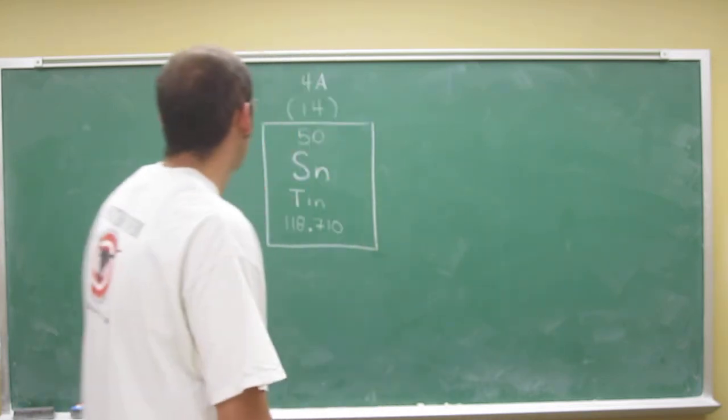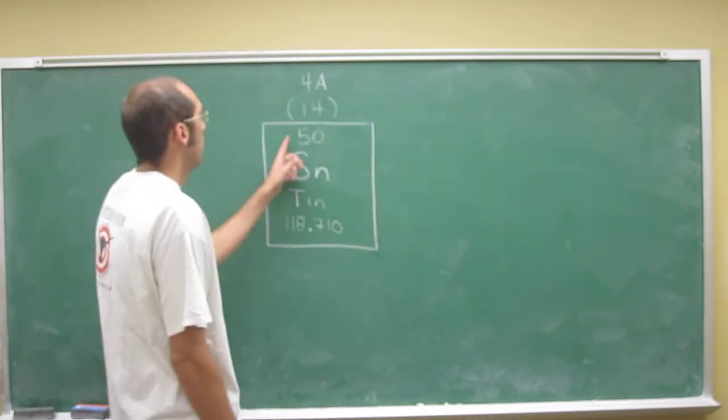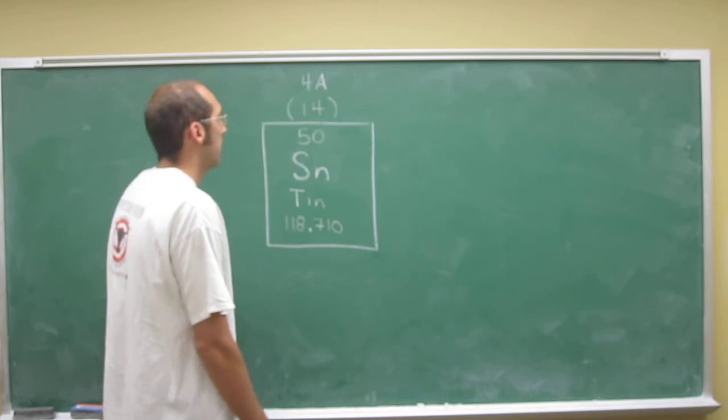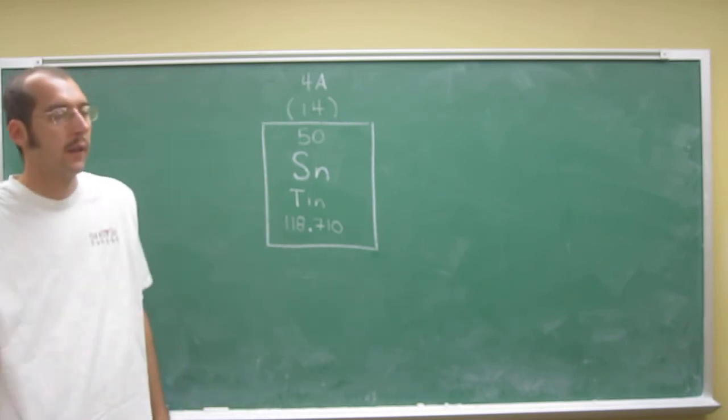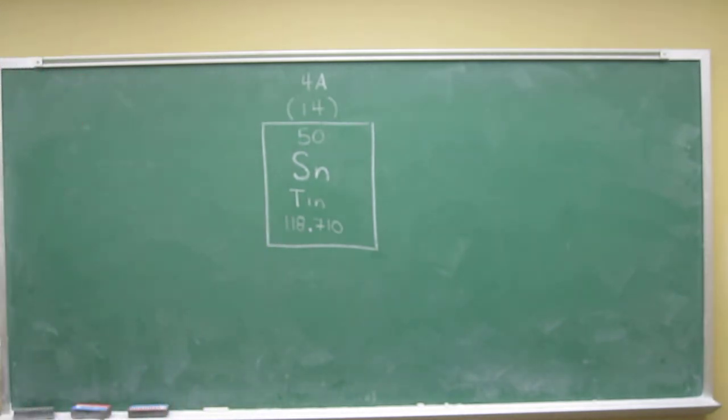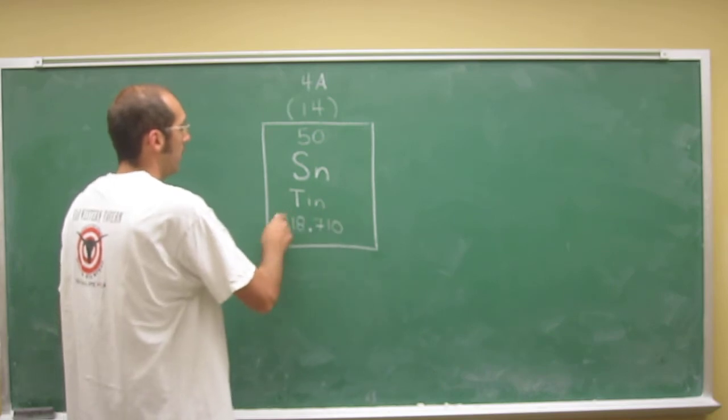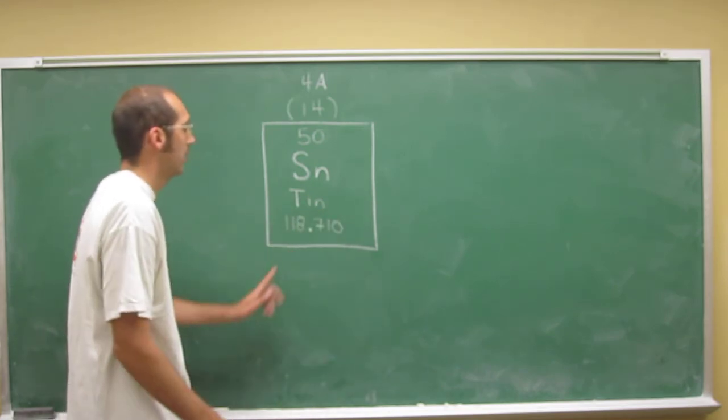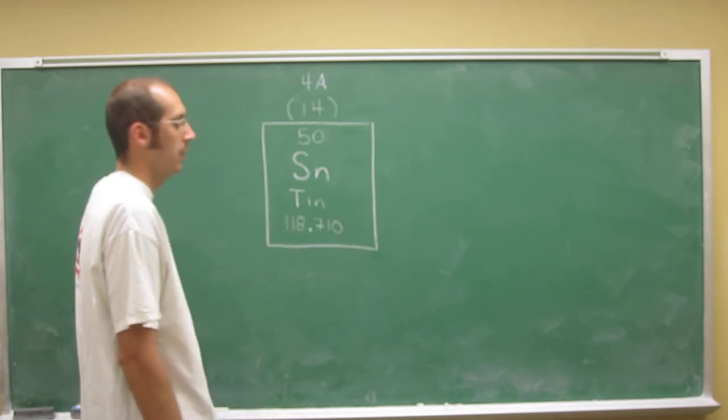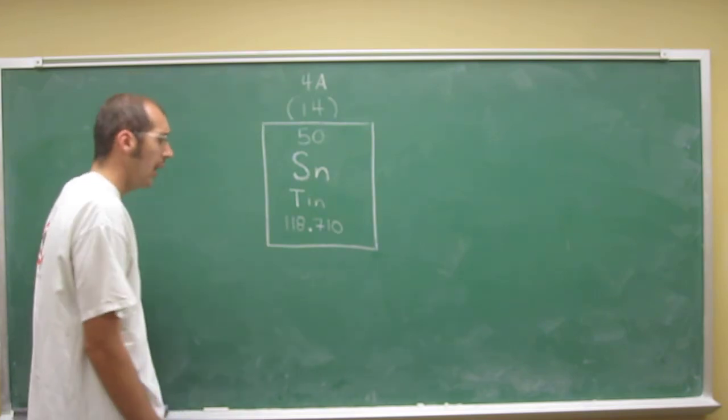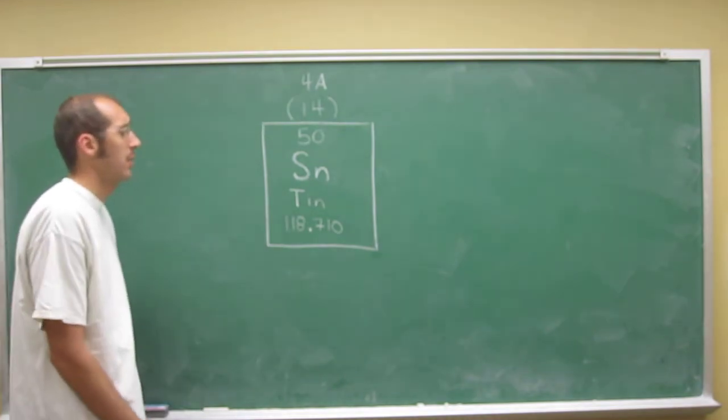The atomic number of tin is 50. It's the 50th element on the periodic table. The atomic weight - this is where the question was - the atomic weight, like we said, is a weighted average: 118.710. There are units associated with that, so 118.710 Daltons is the unit currently being used.